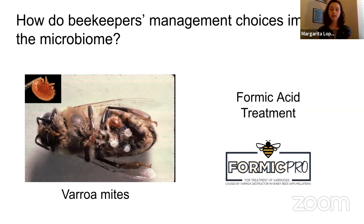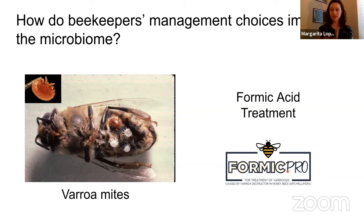One of the miticides we decided to look at, which is quite commonly used, is Formic Pro — a miticide developed from formic acid. As Margarita mentioned earlier, pH and pH conditions are important for the key bacterial and yeast species present in the microbiome. So we wanted to see how adding this intense acid to the colony might change the balance of the microbiome in the bee bread.